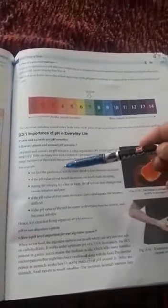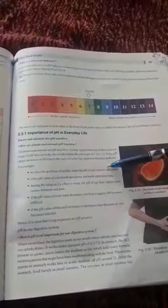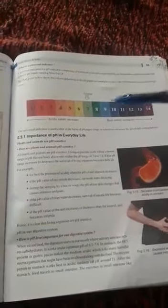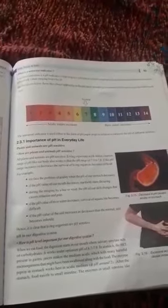For example, we face the problem of acidity when the pH of our stomach decreases. pH decreases means it will become the value 1, 2, 3, and 1, 2, 3 are strong acids.